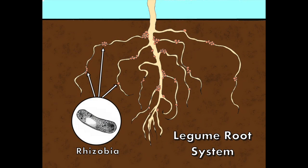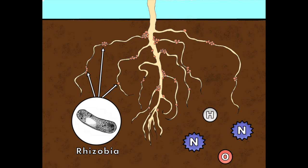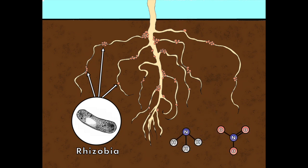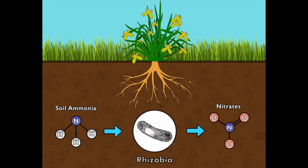Rhizobium will enter the nodules and form a symbiotic relationship with the plant — that is, both bacteria and plant benefit from each other. Like lightning, rhizobium will break the triple bond of nitrogen gas and therefore split the two atoms of nitrogen. Having been split, the individual nitrogen atoms are free to bond with hydrogen and oxygen in the soil to create nitrogen compounds. The nitrifying rhizobia also transforms soil ammonia into nitrates, which the plants assimilate into their tissue.